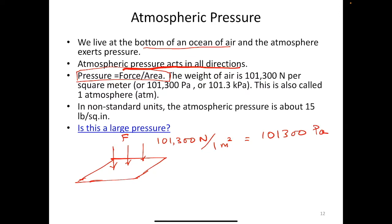You might think that if you hold up a one square meter area with 101,300 newtons acting on it, how come you never notice it? The reason is that atmospheric pressure acts in all directions, so there is also the same amount of force acting on the bottom of that area. That's why it doesn't feel any net force — the same force acts from both directions.